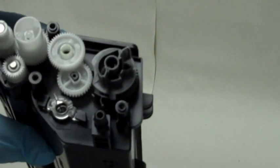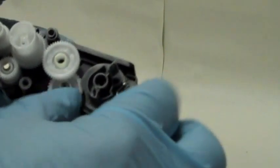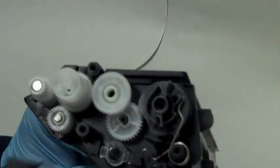Step 4: Install the spring so as to hold the flag gear in place. Step 5: Reassemble the cartridge.